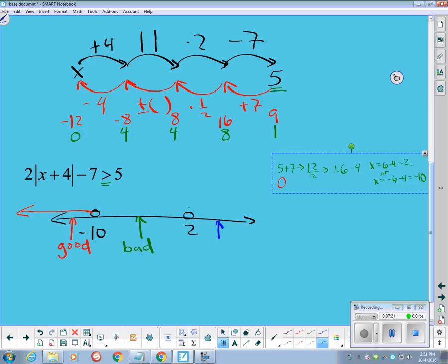And a point to the right of 2, like 3, I could use that. That gives me a 7 and a 7 and a 14 and a 7, which is larger than 5.